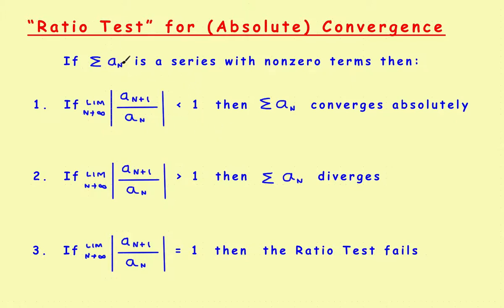To begin, let's run through the ratio test. It says that if you have an original series — it doesn't have to be a positive series, it could have negative terms, it just can't have any zero terms — then if you find the limit of the ratio of two consecutive terms and it's less than one, the series converges; if it's greater than one, it diverges; and if it's equal to one, the ratio test fails. The first thing that should come to mind when you see a sub n+1 divided by a sub n is that you've seen that somewhere before.